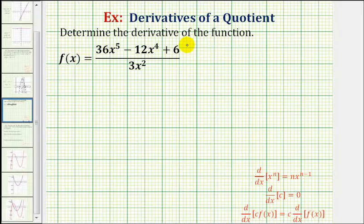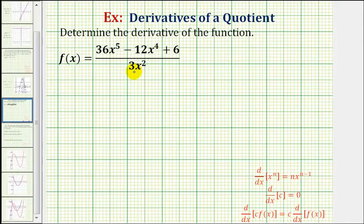We want to find the derivative of the given function that involves a quotient. Just because a function involves a quotient doesn't mean we have to apply the quotient rule to find the derivative. In some cases, we may not even know the quotient rule yet.